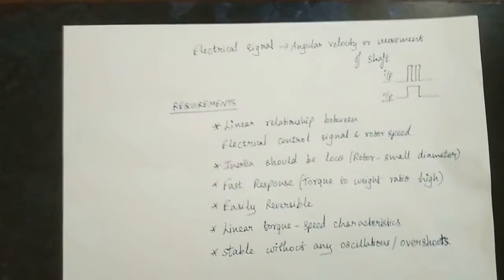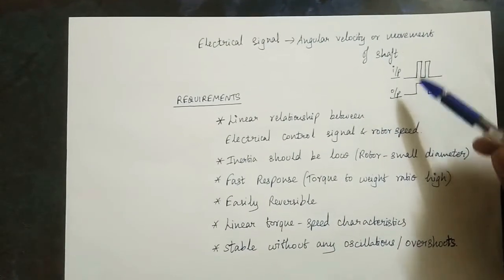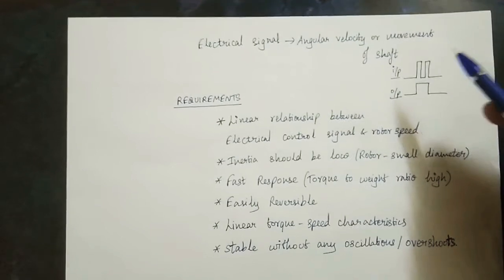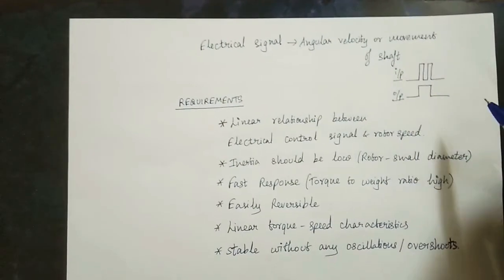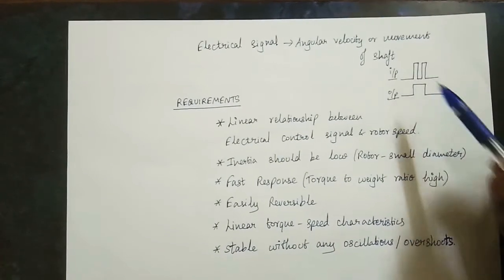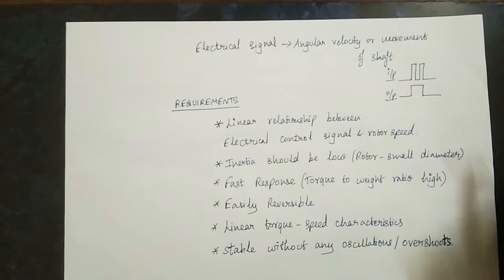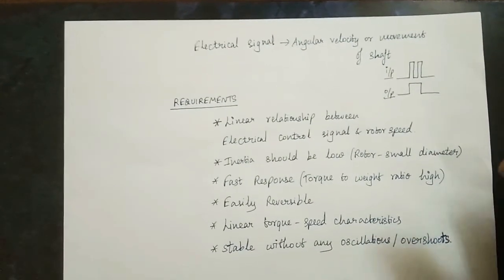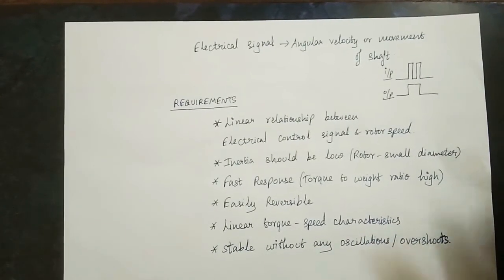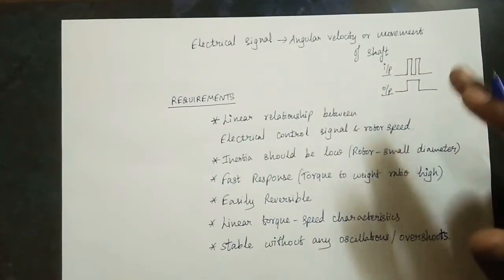We can represent pulse width modulation on a graph. This shows input and output — the input has square waveforms. We can adjust the pulse width modulation to control the input and output.